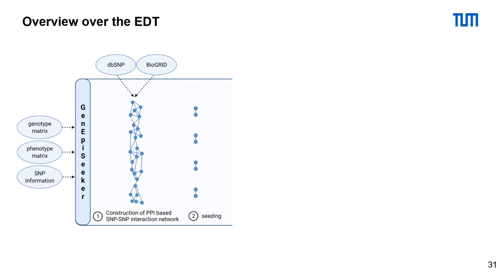Per default, GenEP Seeker uses BioGRID as a PPI. We ship the required dbSNP and BioGRID information upon download. As a first step, GenEP Seeker constructs a PPI-based SNP-SNP interaction network and conducts seeding afterwards.